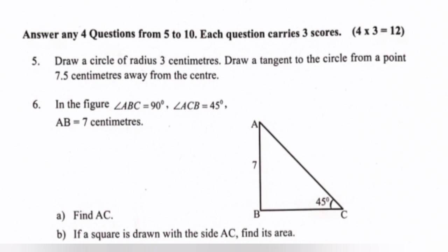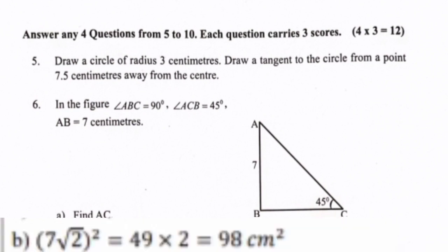Question 6: In the figure, angle ABC equals 90 degrees, angle ACB equals 45 degrees, and AB equals 7 centimeters. Part a: Find AC. Answer: AC equals 7 root 2 centimeters. Part b: If a square is drawn with side AC, find its area. Answer: (7 root 2) squared equals 49 times 2 equals 98 centimeter square.